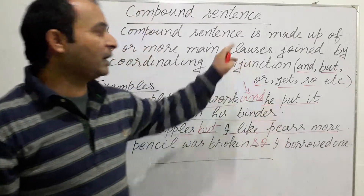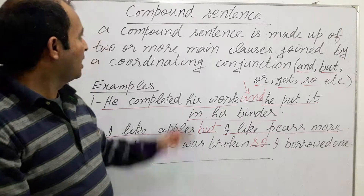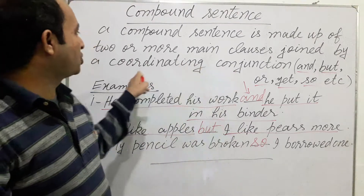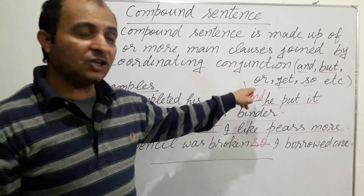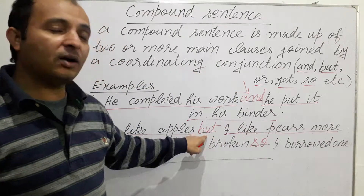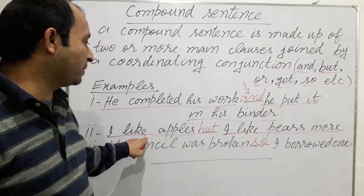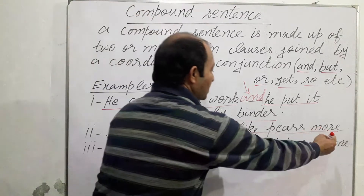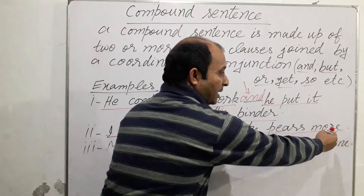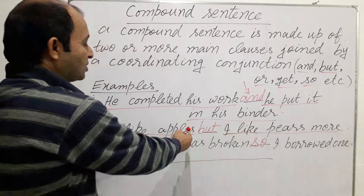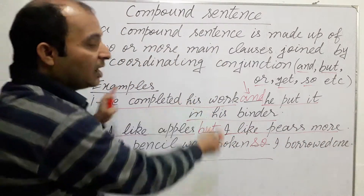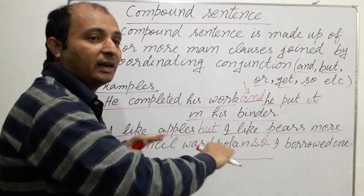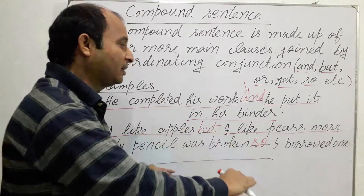Keep in mind the definition: a compound sentence is made up of two or more main clauses joined by a coordinating conjunction. Each main clause is independent — they are not dependent on one another, because they are equal in structure and equal in meaning.